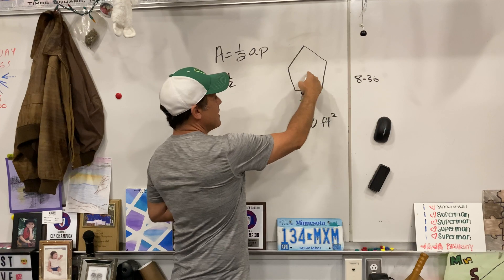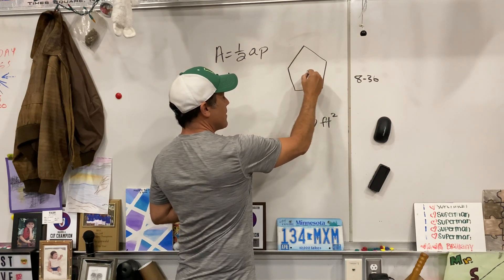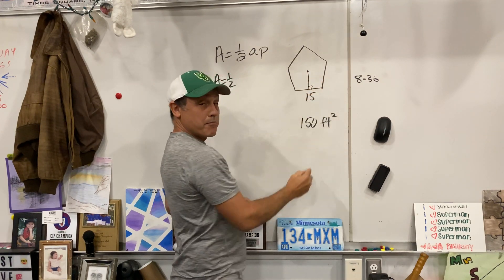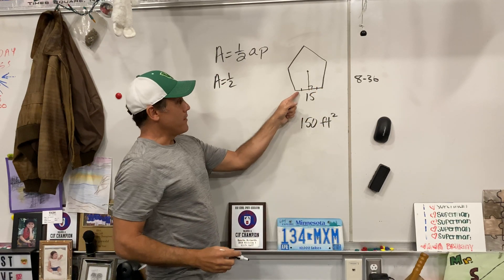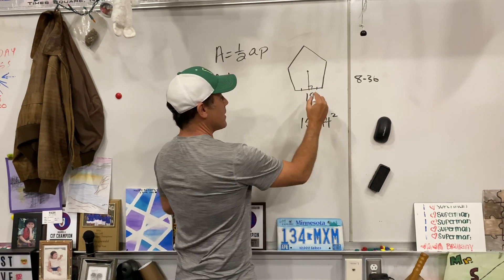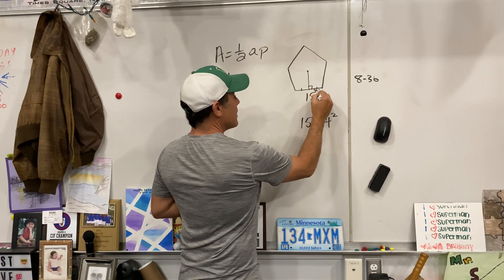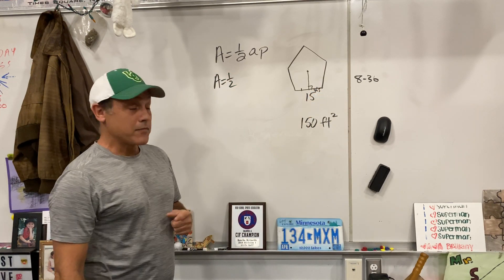Do we know the apothem? No. Remember, the apothem is from the center, comes down perpendicular, right angle, cuts these two bad boys in half. If that's the case, if the whole thing is 15, then this little nug-nug is 7.5.